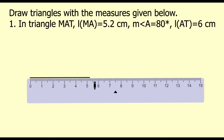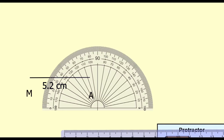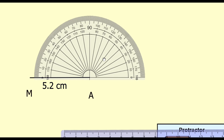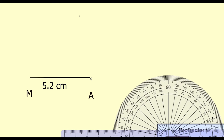Name the segment and write down the length 5.2 centimeters below the segment. Now keep the protractor at A and draw an angle of 80 degrees. We have marked it.